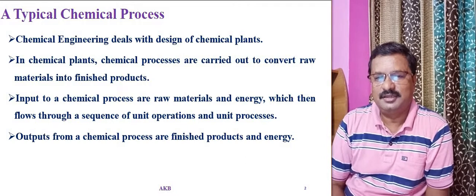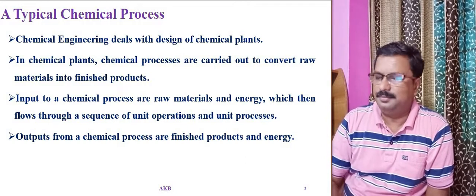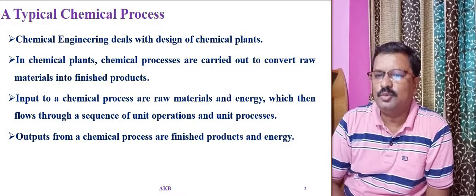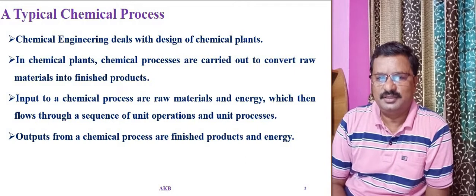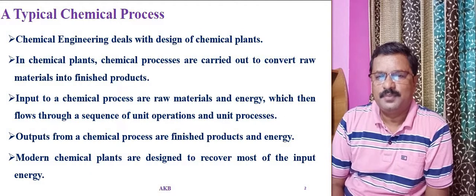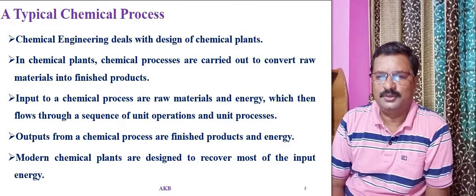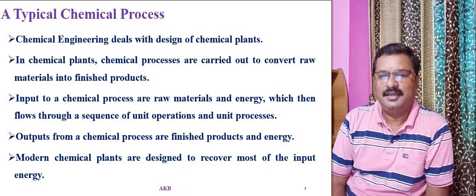Outputs from a chemical process are the final products and some energy. Even though modern chemical plants are designed to recover most of the energy, some amount of energy will be lost. That is why energy is also one of the outputs from a chemical process. So outputs are finished products and energy.